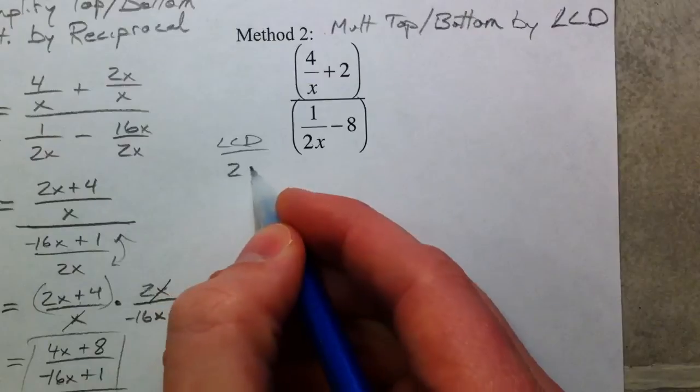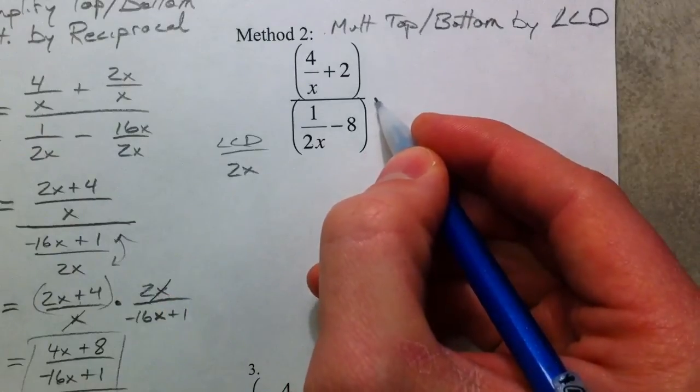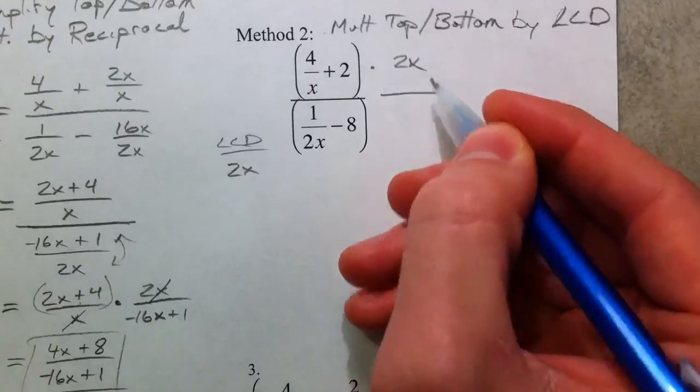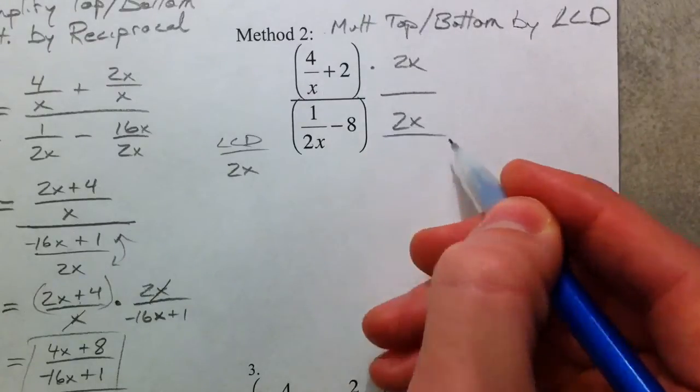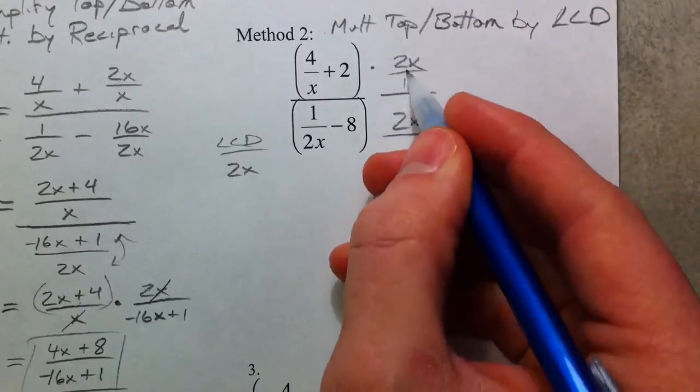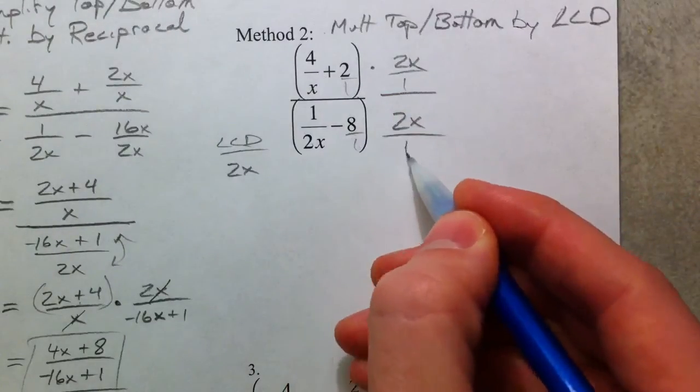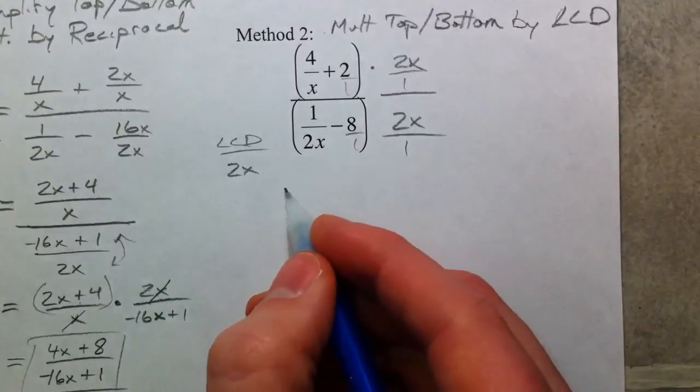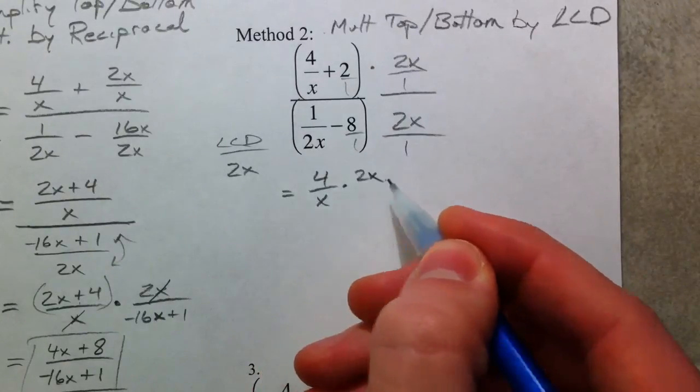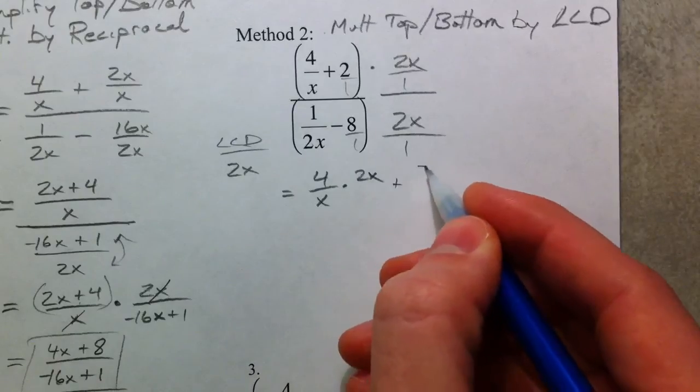So the lowest common denominator between top and bottom. What is that going to be? Top is x, bottom is 2x, and so the lowest common denominator is going to be 2x. So I'm going to multiply the top by 2x, multiply the bottom by 2x. Sometimes it's easier to see if you think of it as 2x over 1 and 2x over 1.